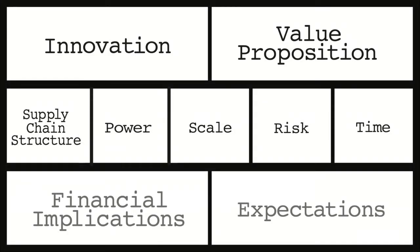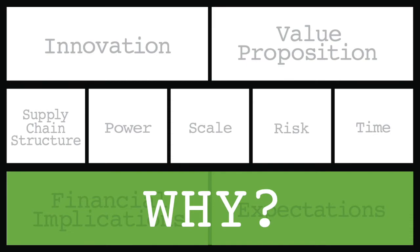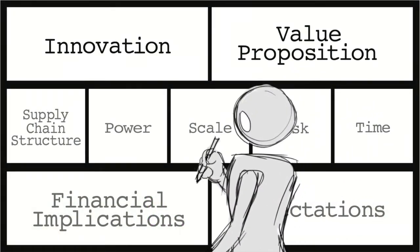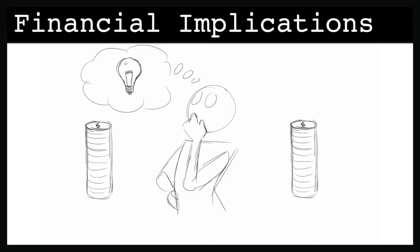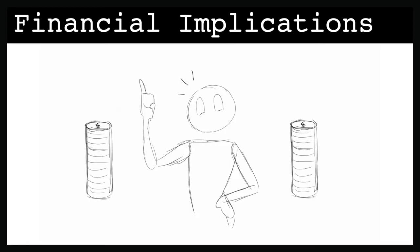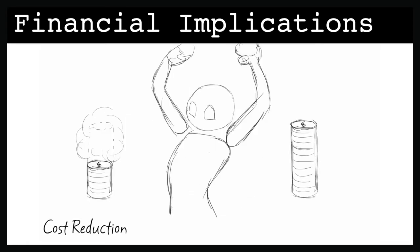Now, move to the third row, the why. First, you'll describe the financial implications associated with the innovation and the value proposition. Ideally, consider both cost reduction and revenue generation.